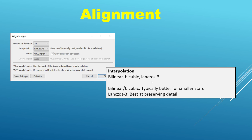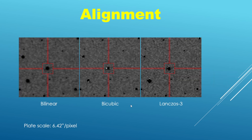Typically you would lean towards bilinear or bicubic if you have small stars present in the image. Otherwise you would lean towards Lanczos 3 because it is better at preserving detail. To give an example, here are three different images all of the same stars — the only difference between them is the interpolation setting: bilinear, bicubic, and Lanczos 3.